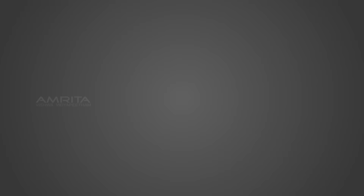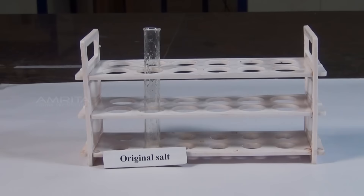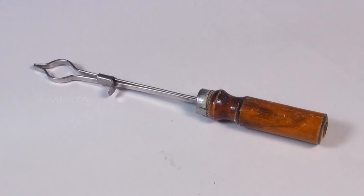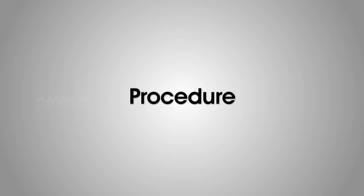Potassium permanganate test. Materials required: original salt, dilute sulphuric acid, potassium permanganate solution, test tube, test tube holder, droppers, and Bunsen burner.